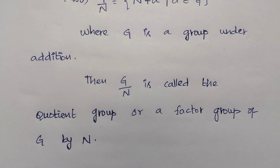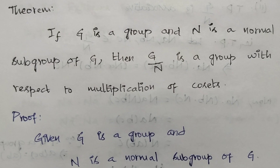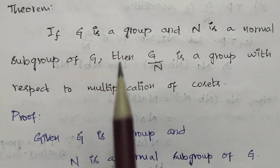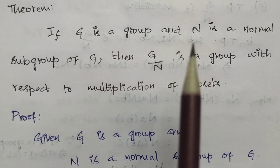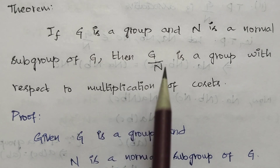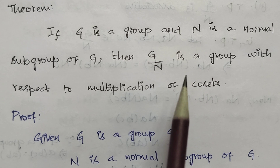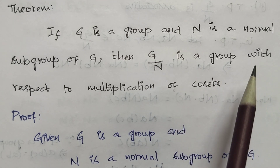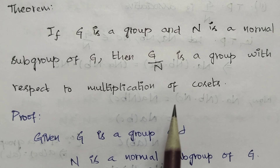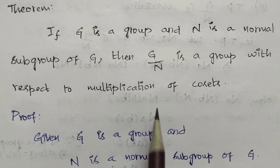Here is an important theorem: If G is a group and N is a normal subgroup of G, then G/N is a group with respect to multiplication of cosets. We are given that G is a group and N is a normal subgroup of G. Then G/N is a group. We will prove this with the operation being multiplication of cosets.